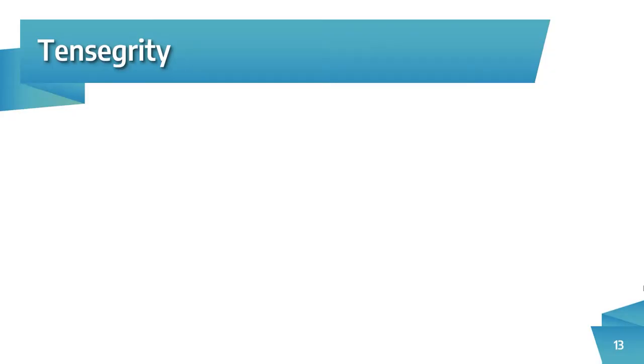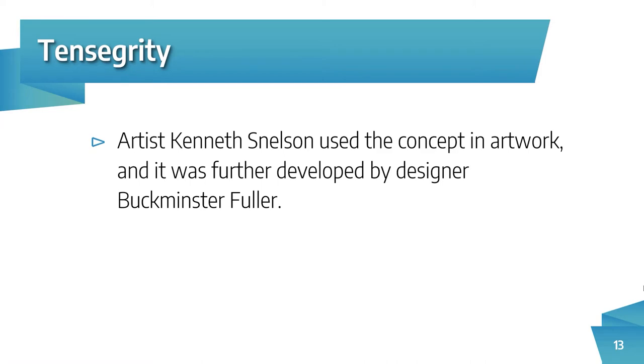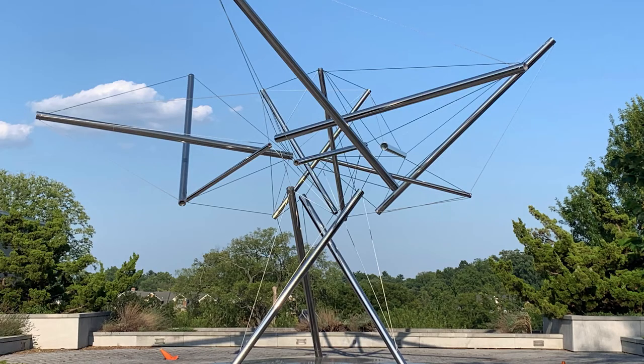The idea of tensegrity was first popularized by an artist by the name of Kenneth Snelson. Kenneth made these beautiful sculptures and works of art all over the United States, where he showed that you can hold and suspend solid struts or pipes in the air using nothing more than the tension of wires and cables. His artwork is beautiful and interesting, but it's not very applicable. However, he opened the door into this concept of tension being used instead of compression.